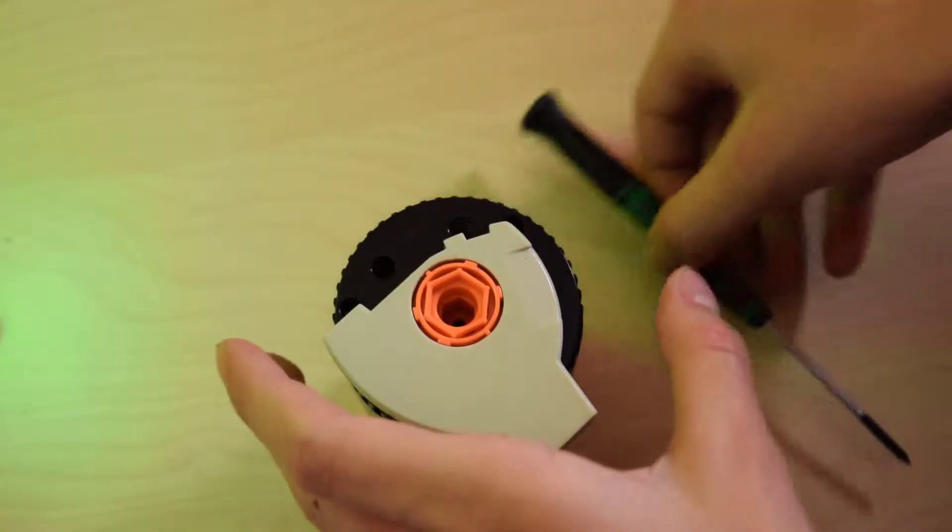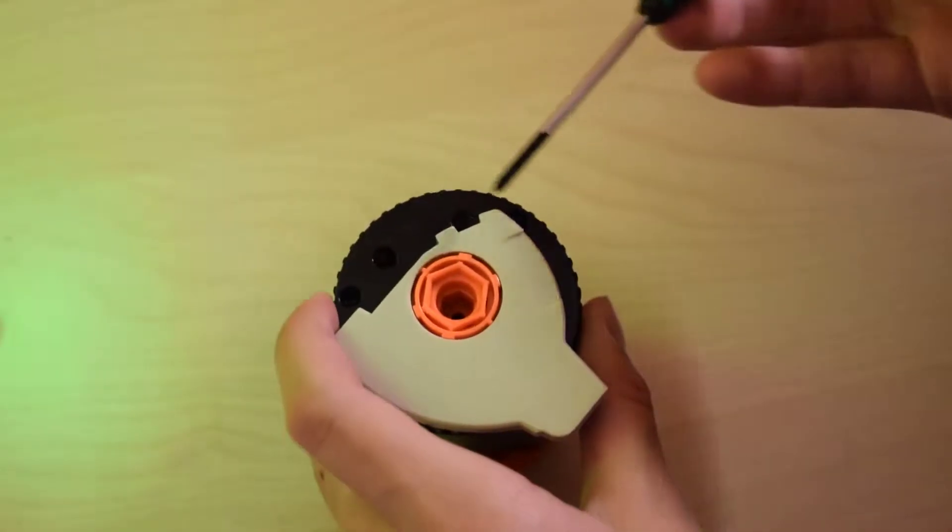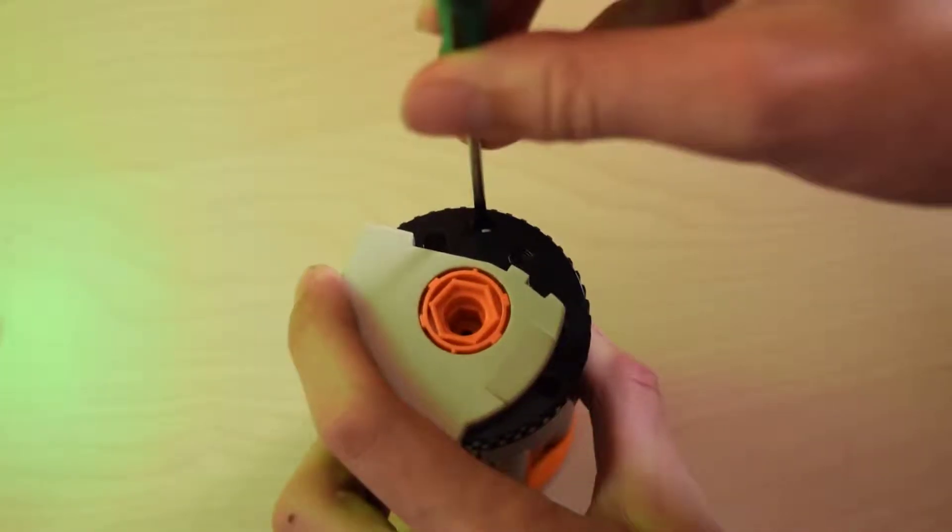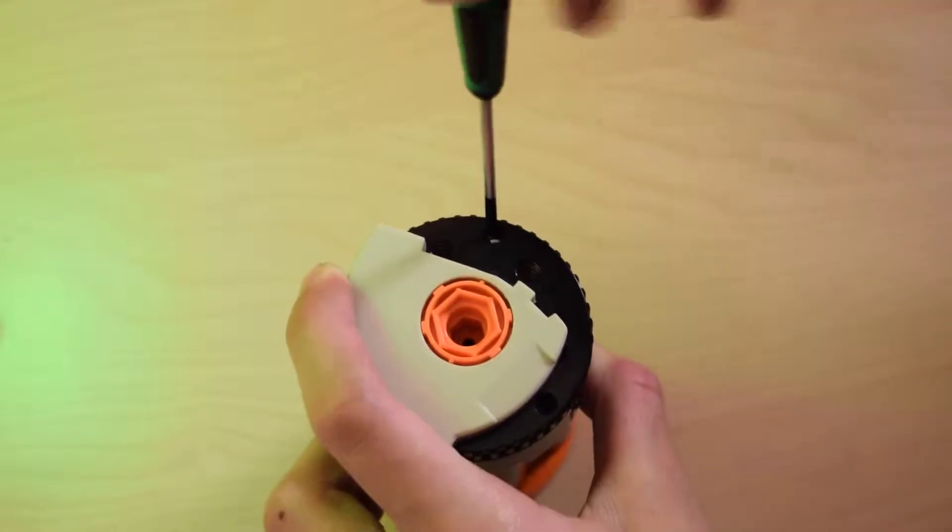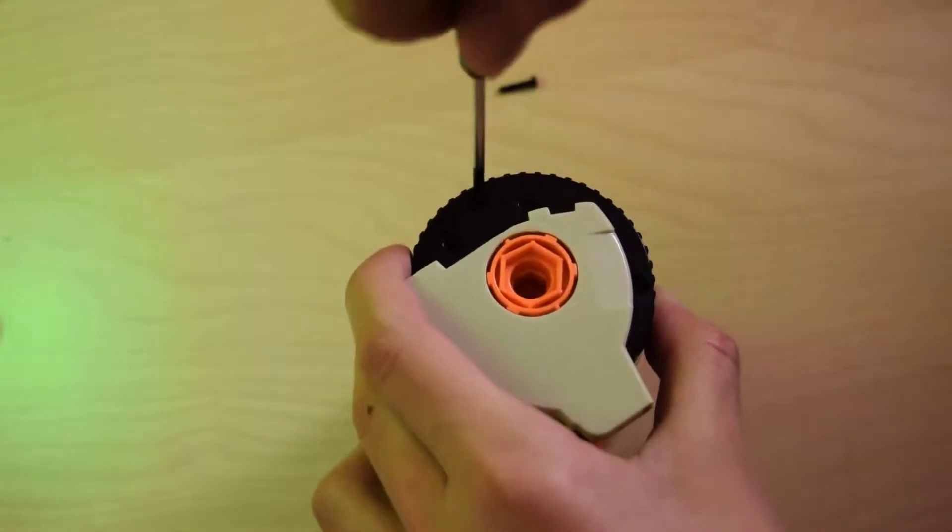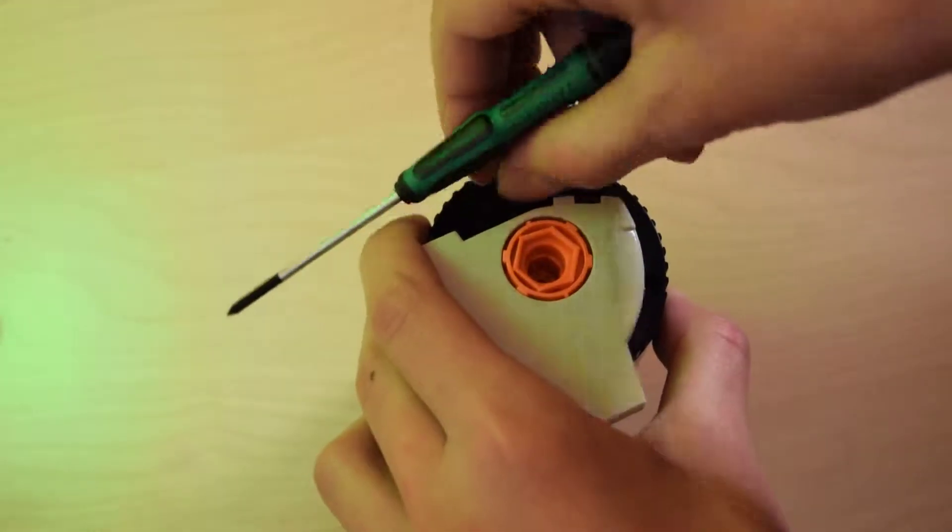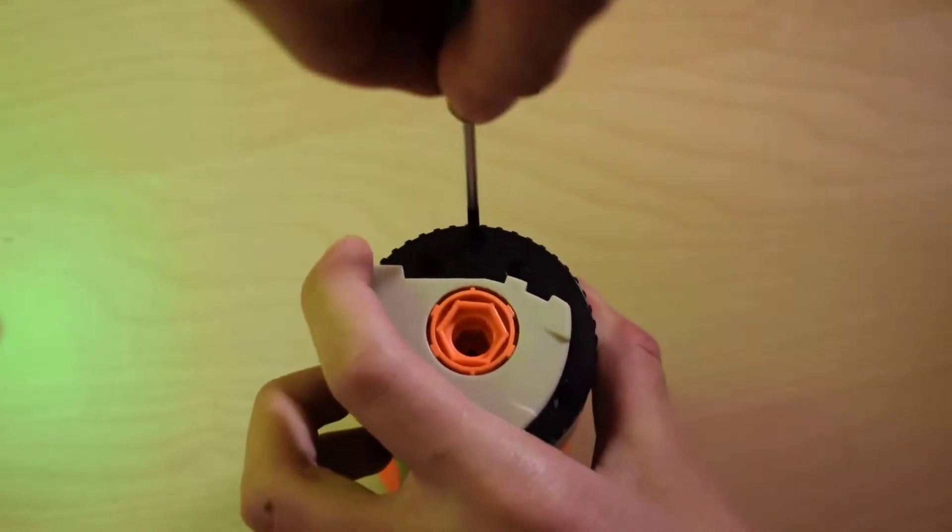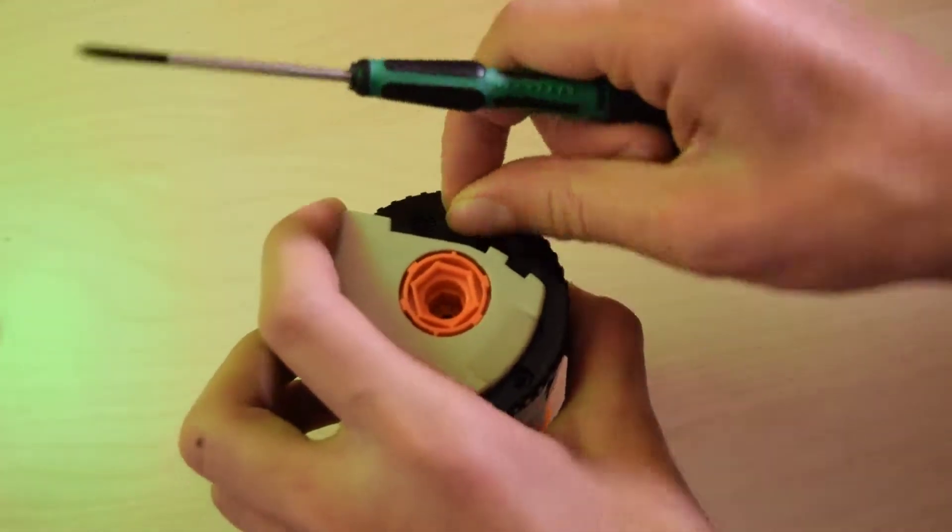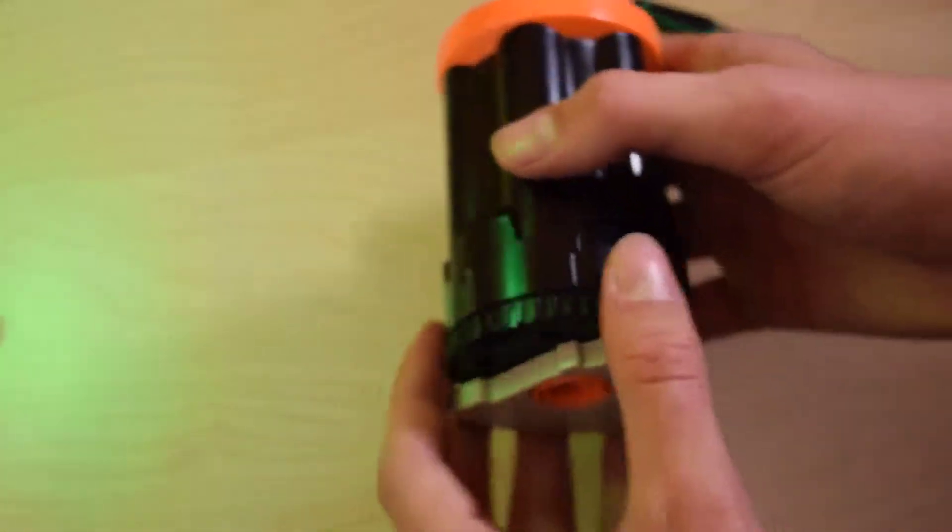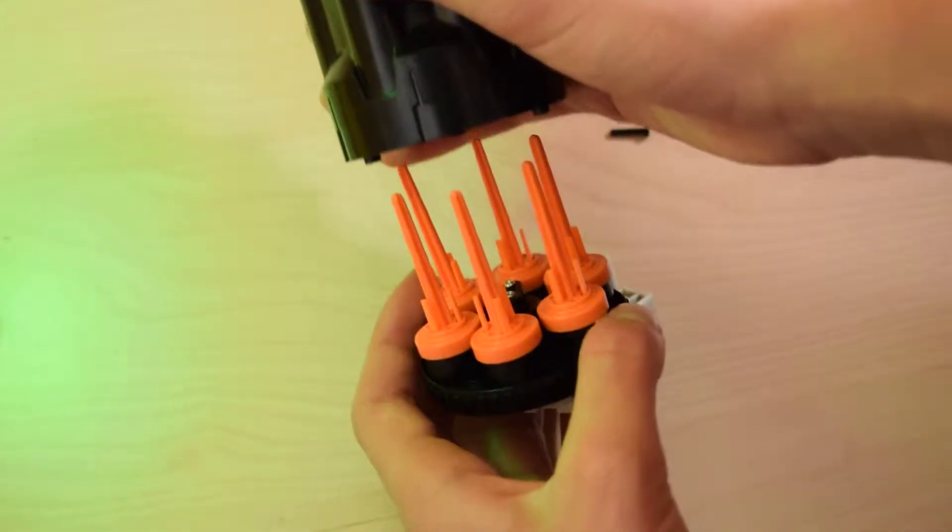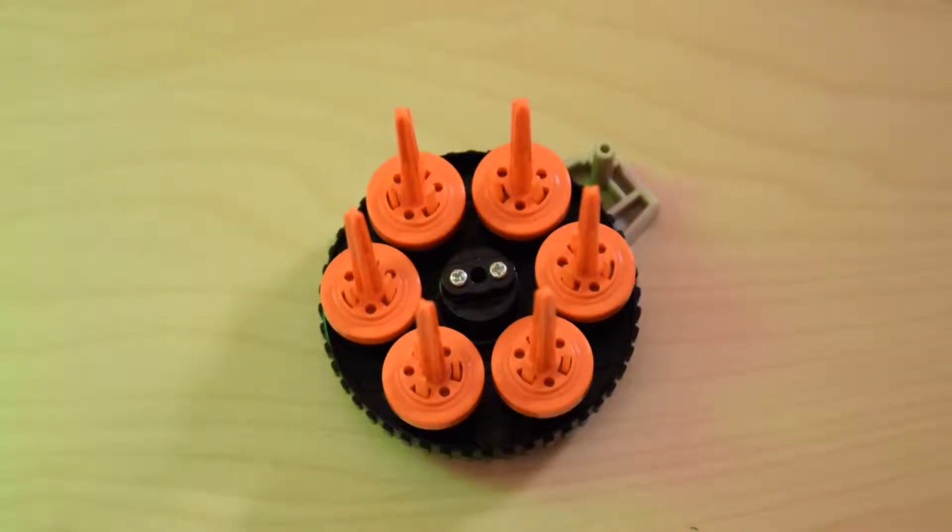Next, you're going to take your precision screwdriver and remove the three screws that are on the bottom of the cylinder. You're going to have to rotate this gray piece around to access them all. We're going to need to do this so that we can access the inside of the cylinder. Once you've done that, you can simply pull off this bottom piece and here are the internals of the cylinder.